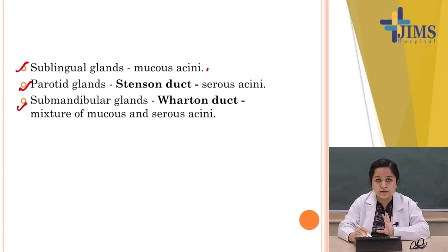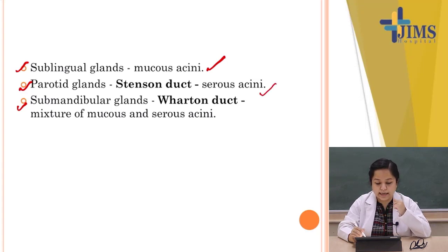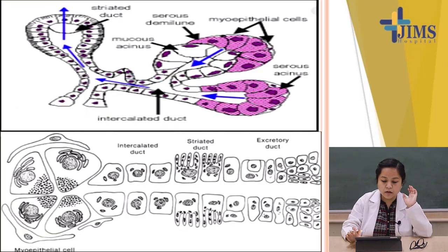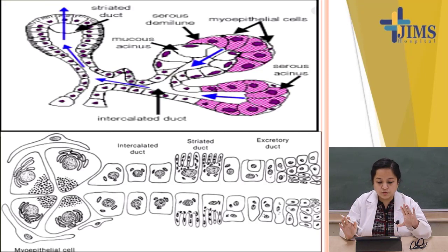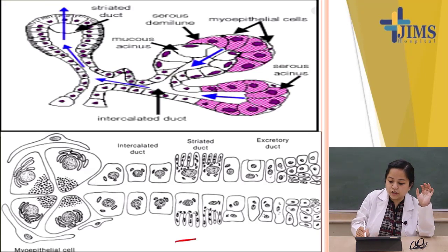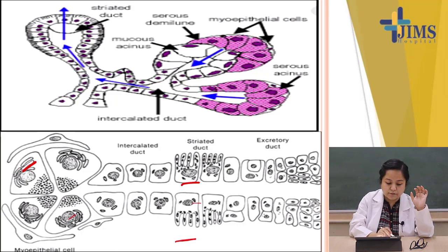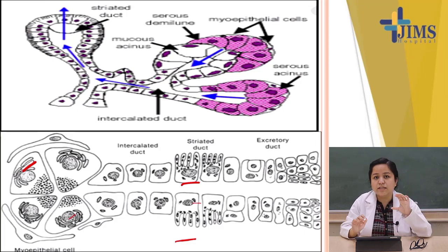To summarize: the sublingual has mucinous acini; the parotid has Stensen's duct and is histologically serous; the submandibular has Wharton's duct and a mixture of serous and mucinous acini. A simple diagram shows the ducts and the acini surrounded by myoepithelial cells.